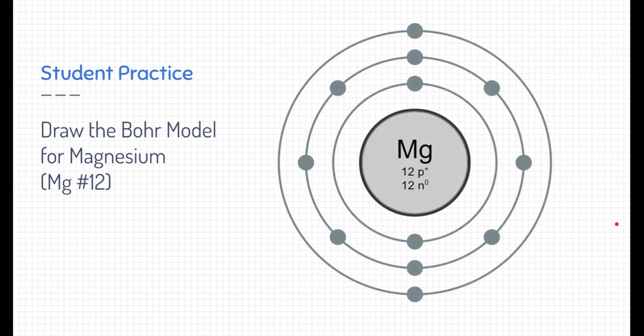Let's do a student practice. See if you can answer this question on your own. Pause the video and see if you could draw the Bohr model for magnesium. Magnesium is number 12 on the periodic table. Its location is important. Did you try it out yourself? Did you figure it out? Well, let's check your work. Here is the answer for the Bohr model of magnesium.